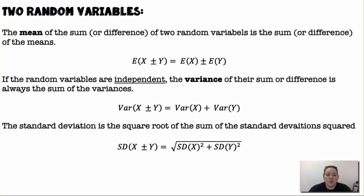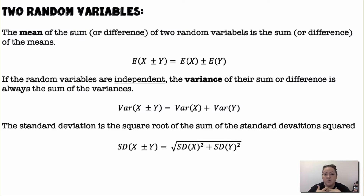For two random variables: the mean of the sum or difference of two random variables is the sum or difference of the means. If I have two random variables and want to combine them, I just add their expected values or means together. If the random variables are independent, the variance of their sum or difference is always the sum of the variances — it's always adding, whether I'm adding or subtracting the random variables, because it's increasing the spread.